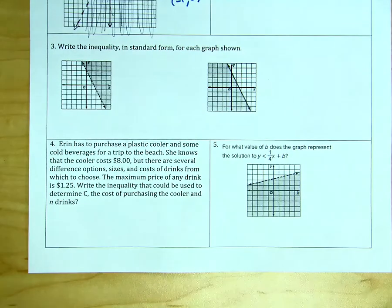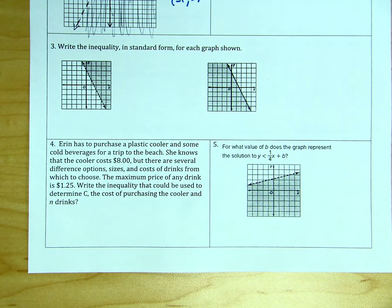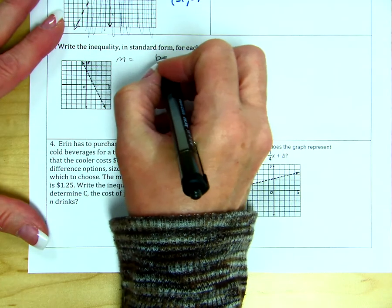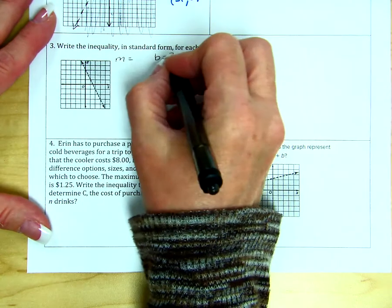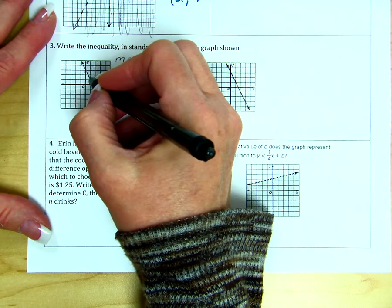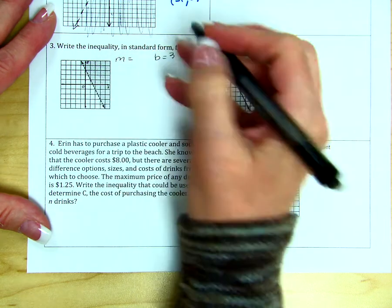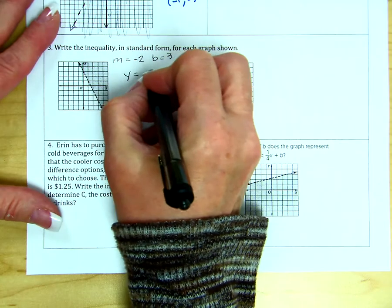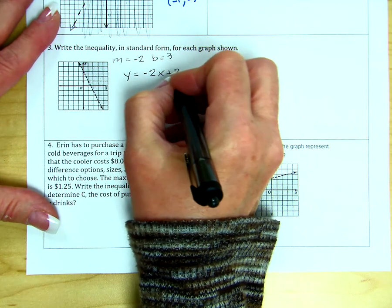For number 3, we have two graphs here. We have to write an equation for each that is in standard form. So first, we need the slope and the intercept. So we have an intercept of 3. A slope is negative, looks like negative 2. So our equation in slope-intercept form is negative 2x plus 3.